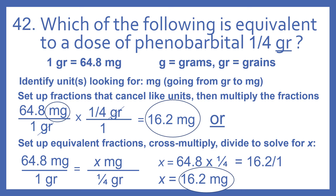I'll show you two different ways to do this problem. First, you can set up fractions that cancel like units, then multiply the fractions. So 64.8 milligrams per one grain times one-fourth grain over one. We have a grain on the top, grain on the bottom, so those cancel and we're left with milligrams. Then we just do the math: 64.8 times one-fourth is 16.2 milligrams.